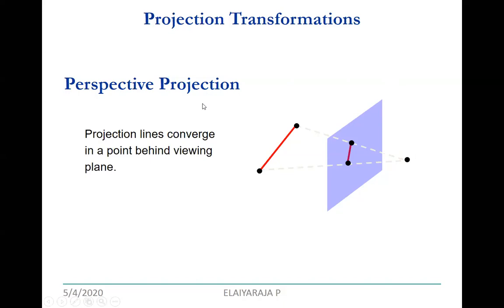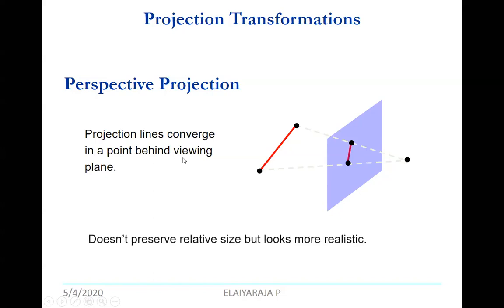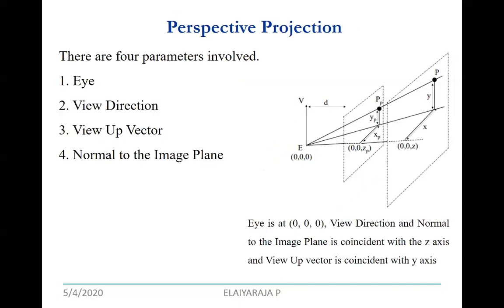In parallel projection we view what is the direction of projection — from which viewpoint you are going to view the viewing plane, so the direction of the viewing plane matters. In perspective projection, the center of projection is used, and the projection lines converge in a point behind the viewing plane. It does not preserve relative size, but it looks more realistic compared to parallel projection.